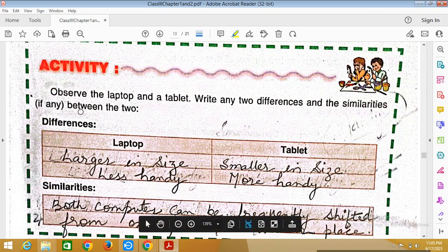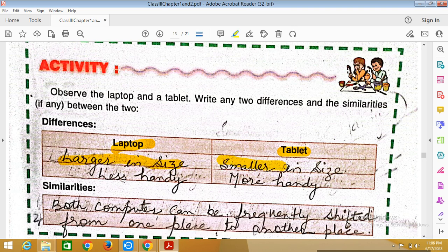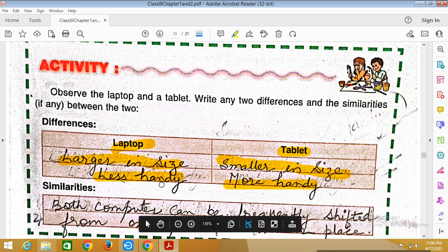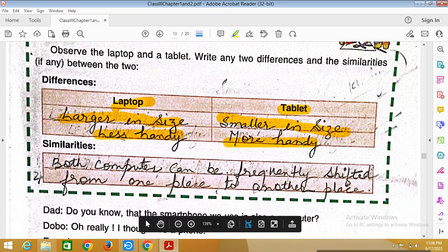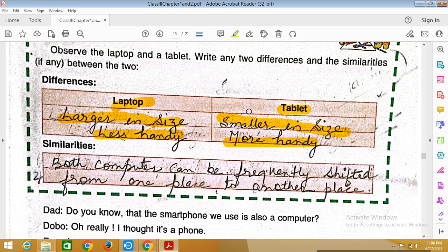Activity 2: Observe the laptop and a tablet and write any two differences and the similarities between the two. Tablet size is comparatively smaller. Laptop is less handy, tablet is more handy. Tablet can be frequently shifted from one place to another place.